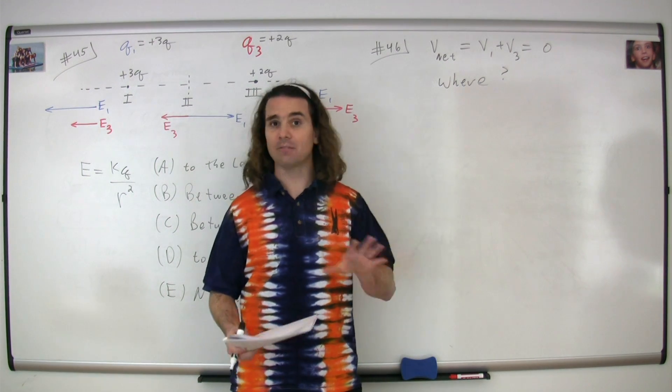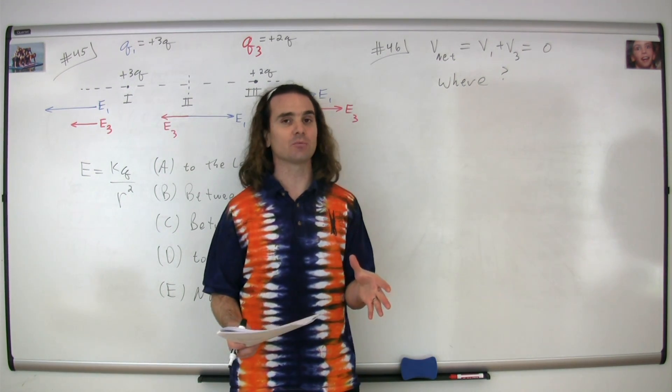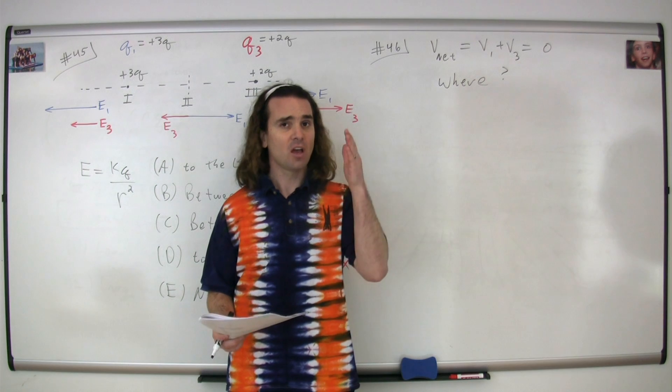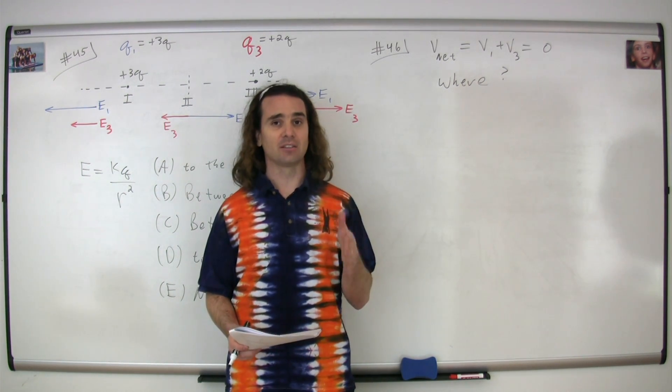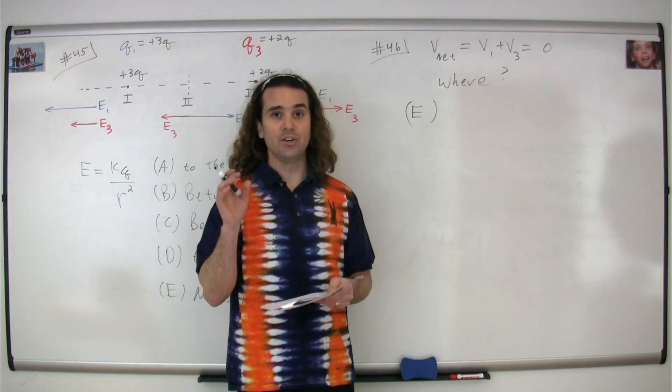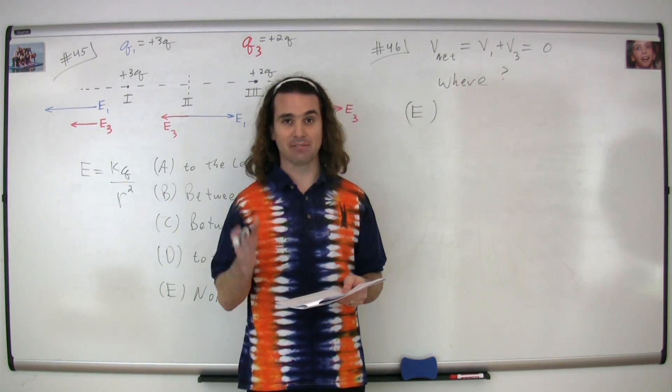If one of these two charges were negative, we could find a point where the electric potential was equal to zero. But because electric potential is a scalar and both these charges are positive, the answer is E, none. This potential is never negative.